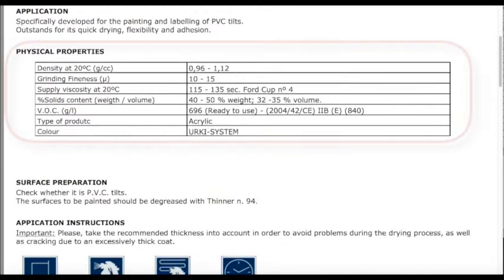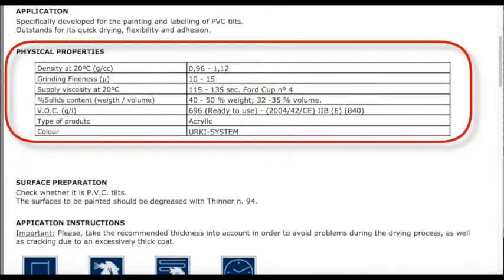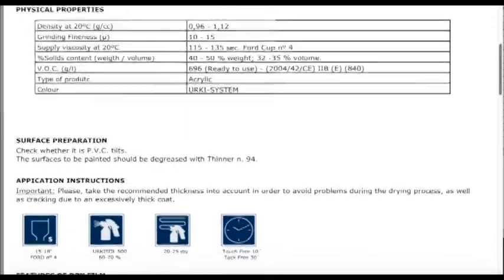Next down, we have Physical Properties, which includes VOC. Sometimes that's necessary to determine how much solvents are in the paint, depending on what area you're in. It'll also tell you that it's acrylic, the color, and that it can be mixed in the urban system.